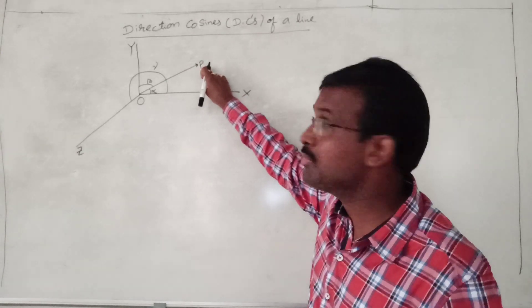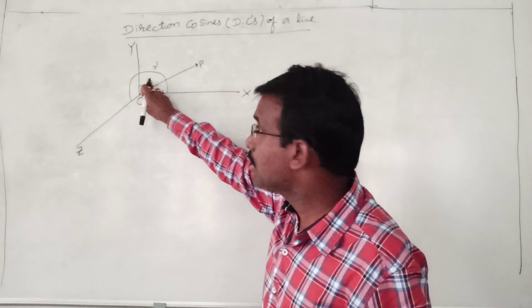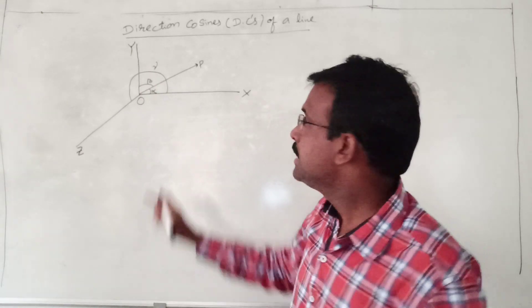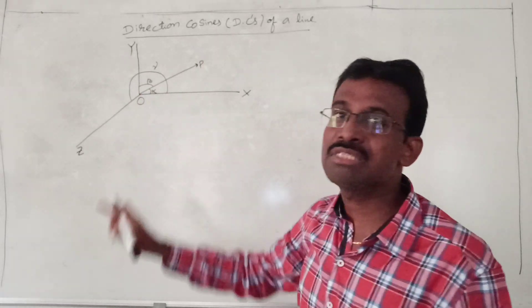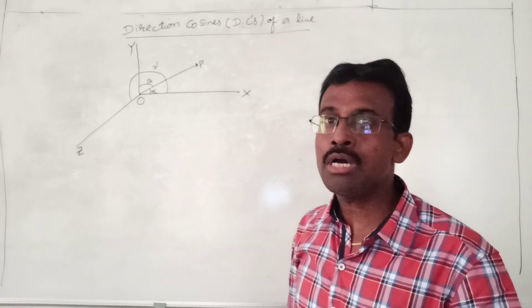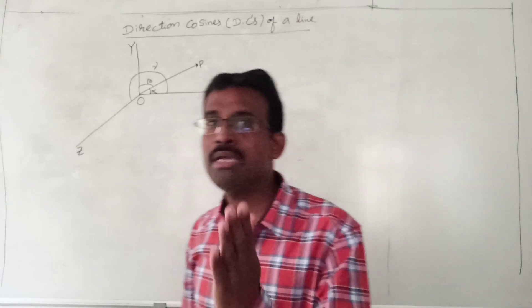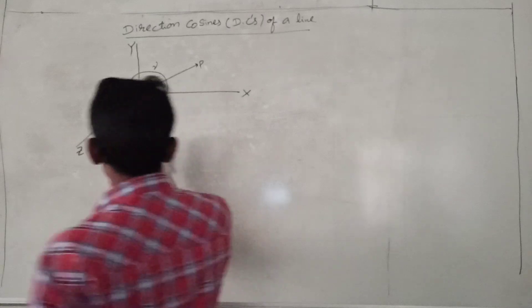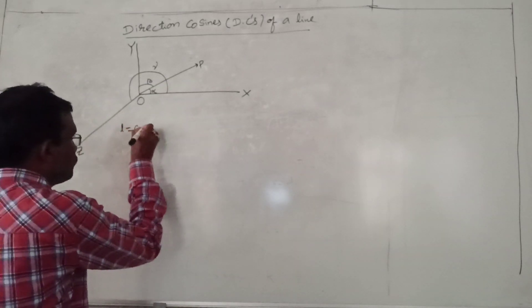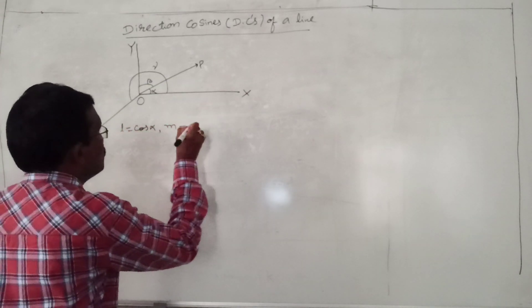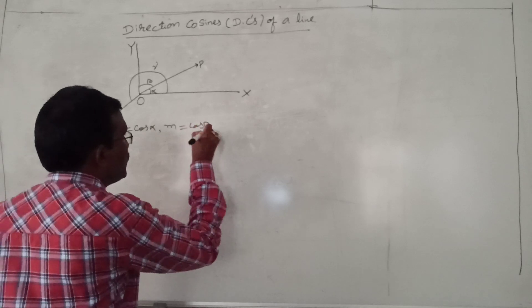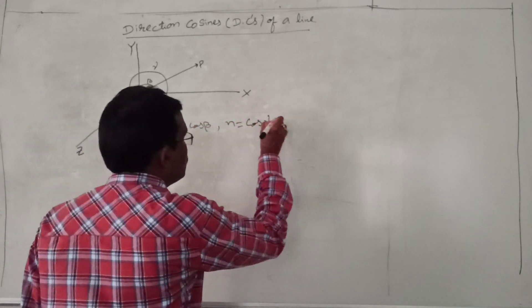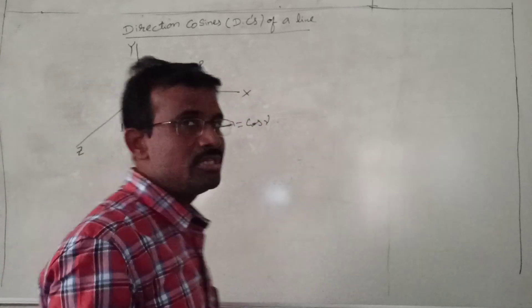Cosine ratios means cos alpha, cos beta, and cos gamma — these are called direction cosines, or DCs, of this OP line, which are denoted by L, M, N respectively. That means L equals cos alpha, M equals cos beta, and N equals cos gamma. These are the direction cosines of this OP line.